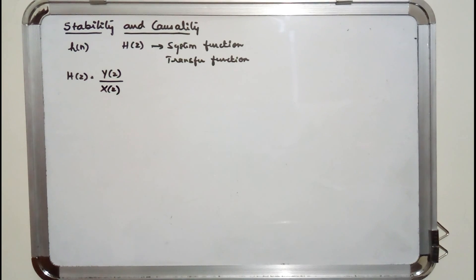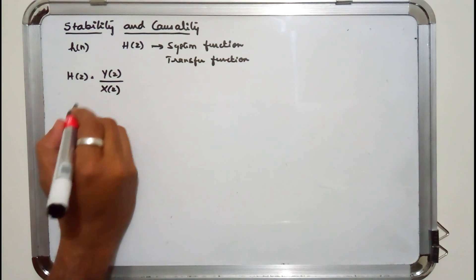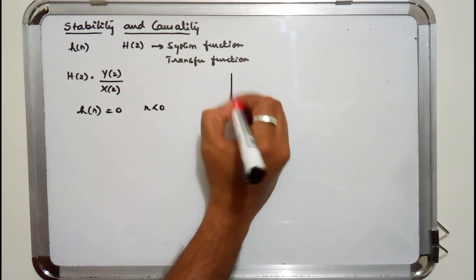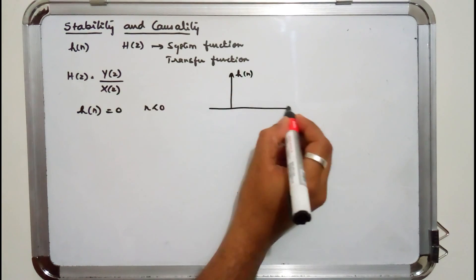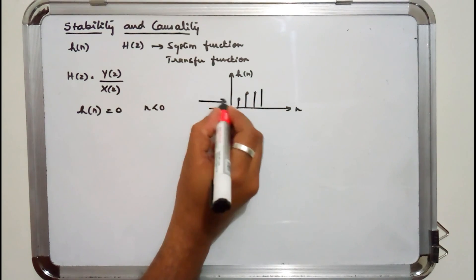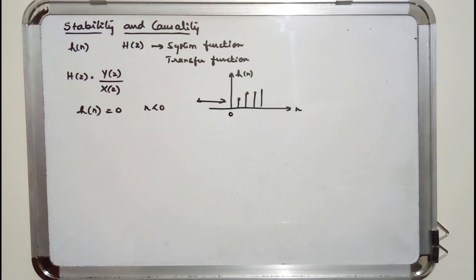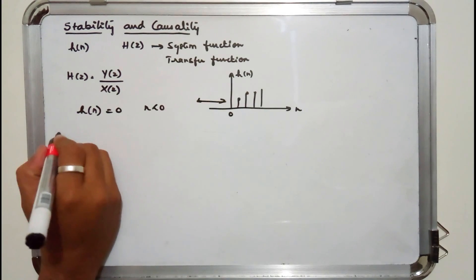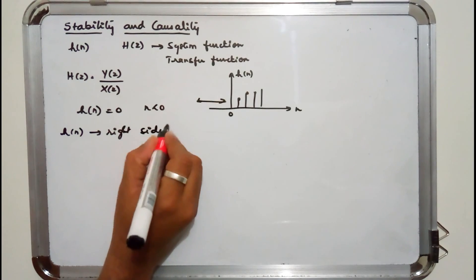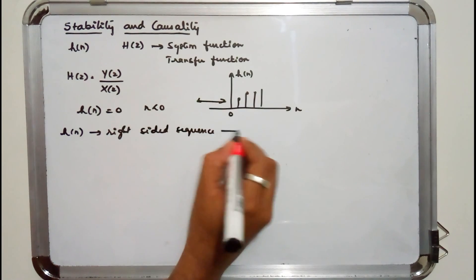We already know that for a system to be causal, h(n) should be 0 for n less than 0. That means h(n) should not have any waveform for n less than 0 — it can have waveforms for n ≥ 0, but for n less than 0 it should be zero. This means h(n) is a right-sided sequence.